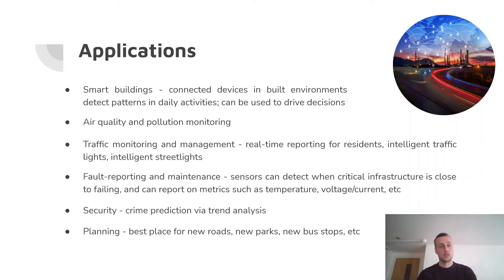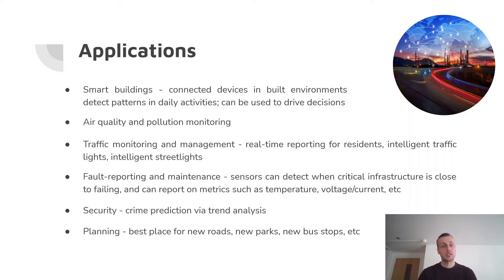Some applications — smart buildings: connected devices in built environments detect patterns in daily activities, which can be used to drive decisions about when the building opens and the best times to do things. Air quality and pollution monitoring, including CO2 monitoring, with sensors for any kind of monitoring in an urban environment. Traffic monitoring and management provides real-time reports on traffic and intelligent street lights to save electricity. Fault reporting and maintenance: sensors can detect when critical infrastructure is close to failing and report back on metrics, helping save money by catching failures before they cascade.